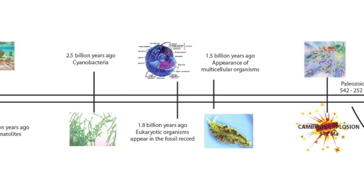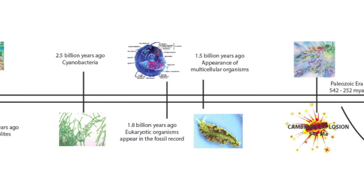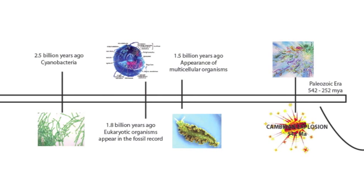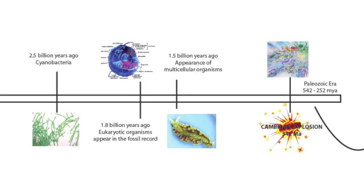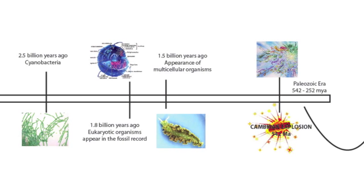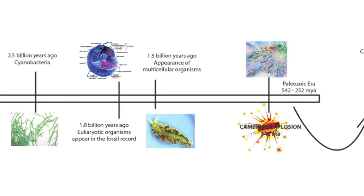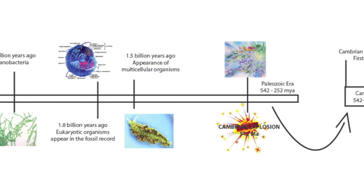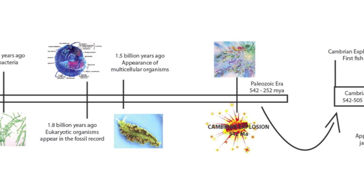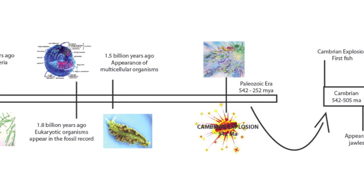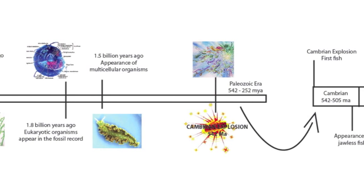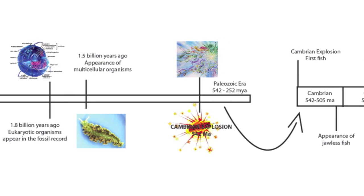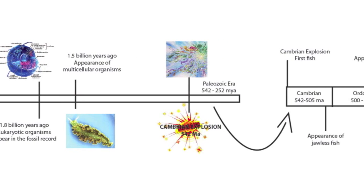Most of the major animal phyla rose over the next 30 million years. There was initially a major diversification of life, including the divergence of chordates, arthropods, echinoderms, mollusks, brachiopods, and several other phyla. Fish first appeared during the Cambrian explosion. The first agnatha, also known as jawless fish, appeared in the Cambrian period as the first vertebrates with calcified bones.